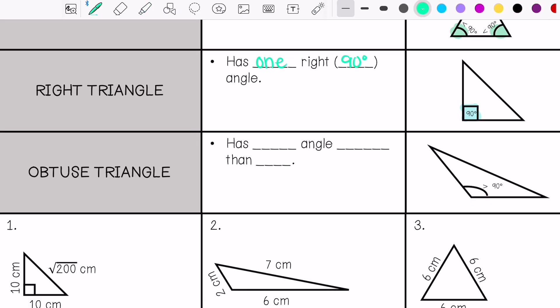And then we have obtuse, which has one angle greater than 90 degrees. So at least one angle greater than 90.